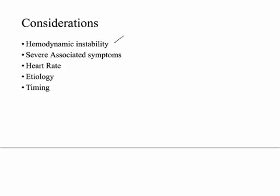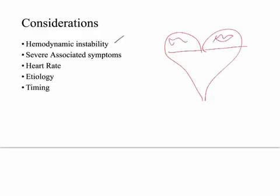First, you want to ask: do they have hemodynamic instability? In some cases, atrial fibrillation can cause somebody to not get blood pumped properly. The atria is fibrillating — just fluttering, not really pumping. Blood flows in from the lungs and from venous return, but if you don't get that last 30% kick from the atria down into the ventricles, you're reducing your cardiac output and can have hemodynamic instability.